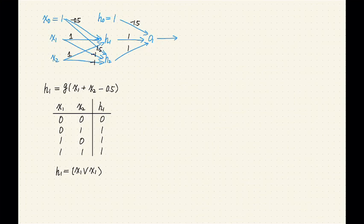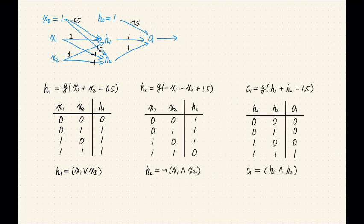This is the expression for H1. And if we write down the truth table, you will realize that H1 is representing X1 or X2. All right, so here are the expressions for H2, which turns out to be a negation of the AND function. And then O1, which is a function of H1 and H2, turns out it's H1 and H2. So putting everything together, we will see once again that O1 is indeed the exclusive OR function.